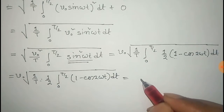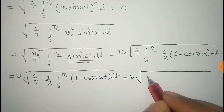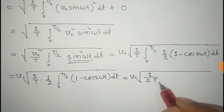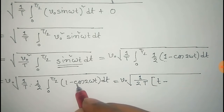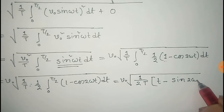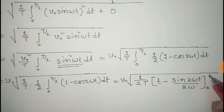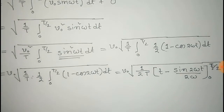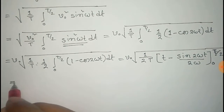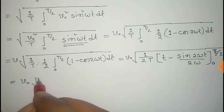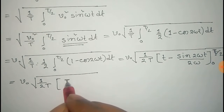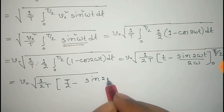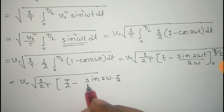That equals V₀ times the square root of 1/(2T), and integrating: the integral of 1 is t, and the integral of cos(2ωt) is sin(2ωt)/(2ω), evaluated with limits from 0 to T/2. So we get t − sin(2ωt)/(2ω), evaluated from 0 to T/2. For the upper limit T/2, this becomes sin(2ω · T/2)/(2ω).